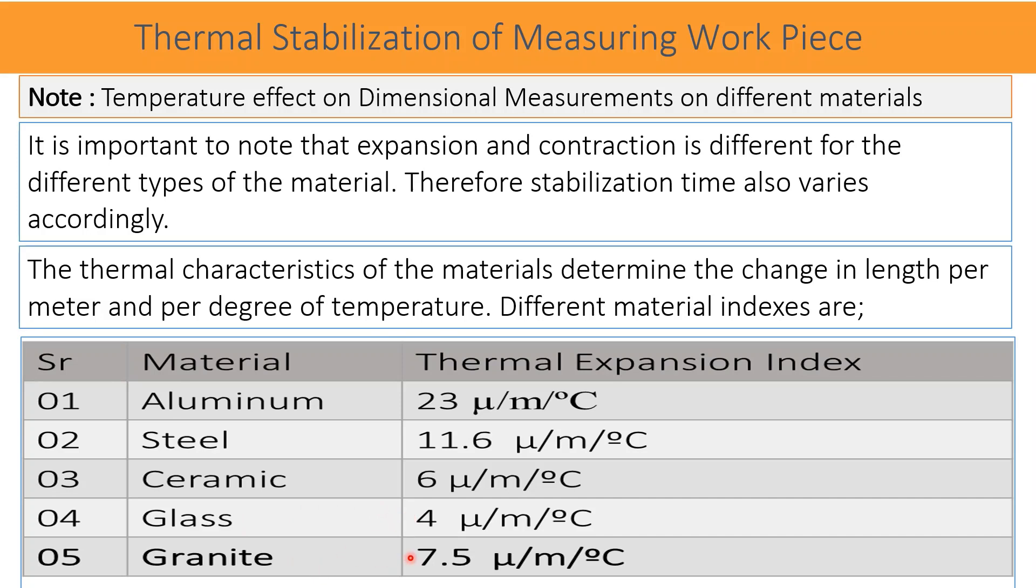One more important point to understand and should not be mistaken: since aluminum is almost double than the steel, therefore we cannot conclude that the time soaking required for the aluminum is double than the steel or half of the steel or vice versa.